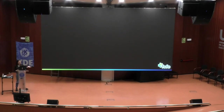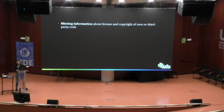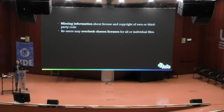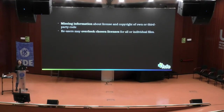Let's talk about how the state of play is at the moment. These are some of the common mistakes we've seen so far. The first one is missing information about license and copyright of own or third-party code — sometimes you go to a repository and it's really hard to identify this legal information. The second one is that re-users may overlook the chosen licenses for all or some individual files, and the freedoms we give depend a lot on the licenses we choose, so this information is really important.